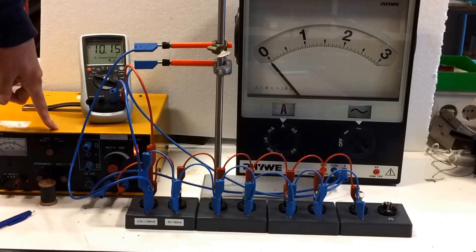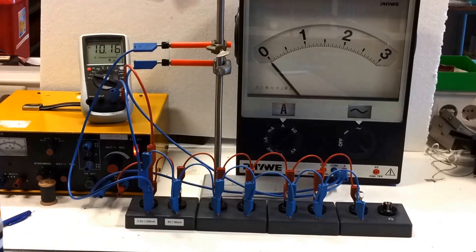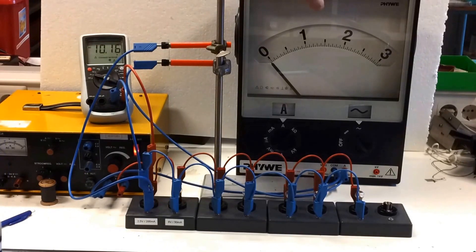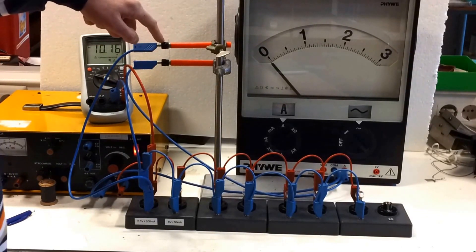The current of the power supply has to run through a fuse and through an ampere meter. So all the current, you can see up here, has to run through the fuse.